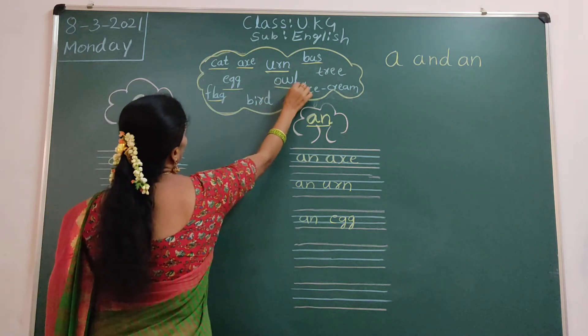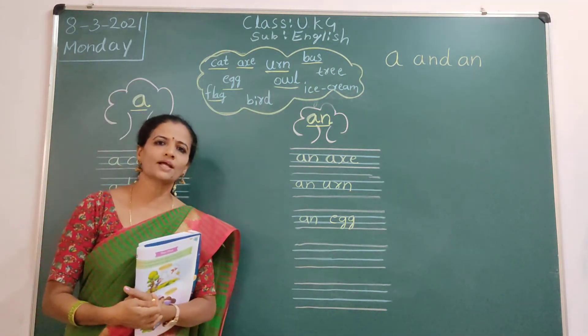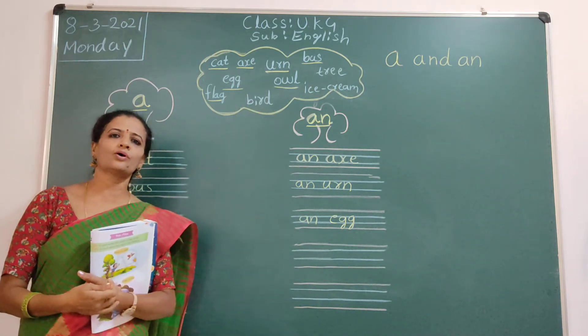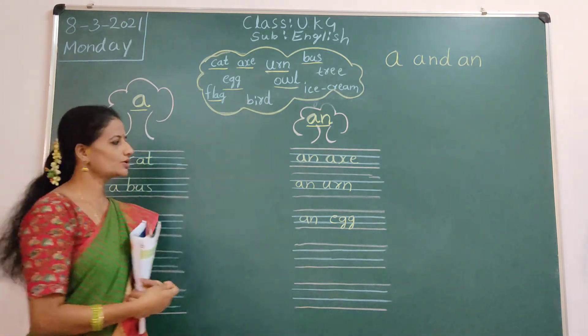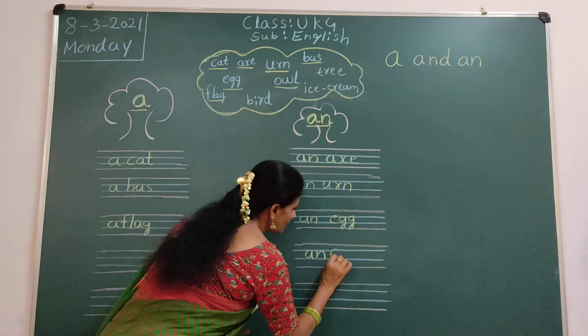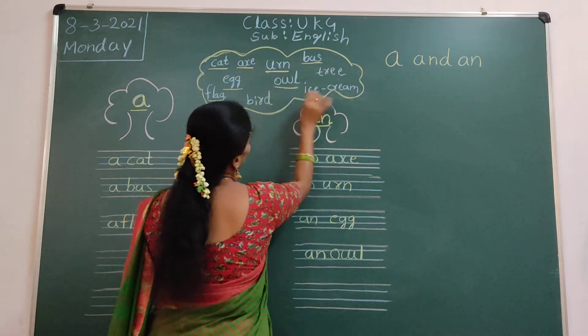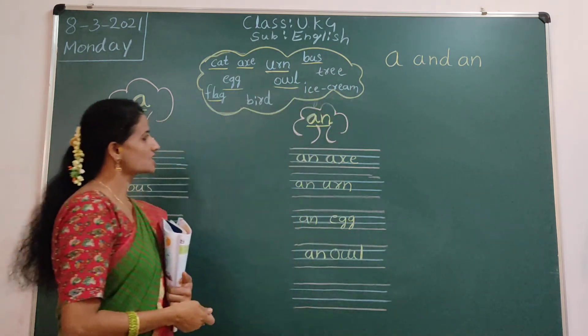Next, owl. So, O. O is a vowel. A, E, I, O. Okay. We will use An. Okay. A, N. An. Owl. Owl also finished.